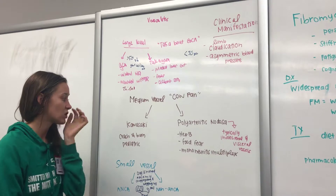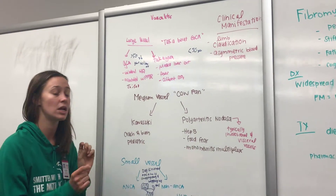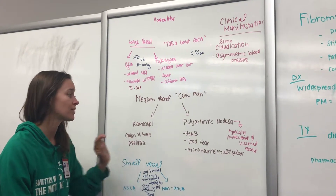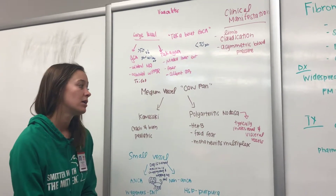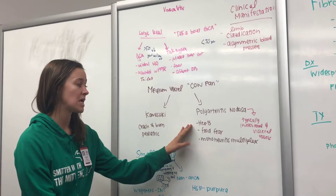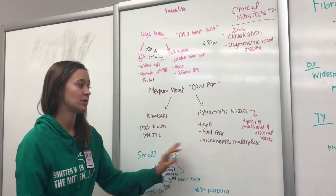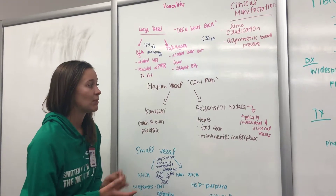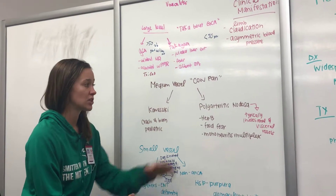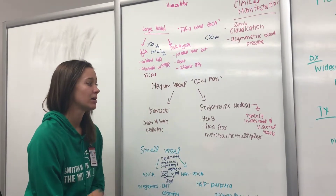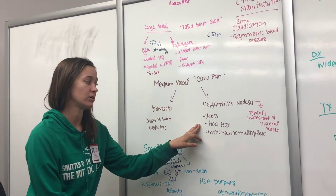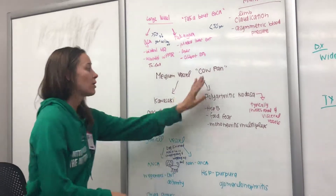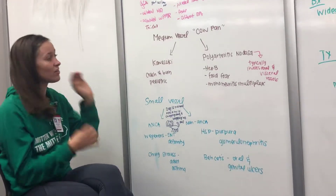Kawasaki is a pediatric condition associated with a really high sudden-onset spiking fever — the mnemonic is 'crash and burn.' Polyarteritis nodosa can be associated with hepatitis B, fever, and mononeuritis multiplex. It typically involves the renal and visceral vessels. All the unusual associations are with PAN — just remember pan, food, hep B. So those are the medium vessel vasculitides: Kawasaki and polyarteritis nodosa.